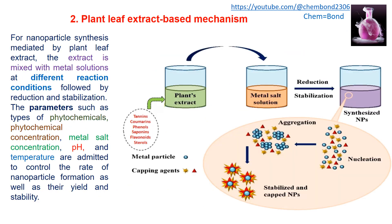The second method is the plant leaf extract-based mechanism for nanoparticle synthesis. The extract is mixed with a metal solution at different reaction conditions, followed by reduction and stabilization. The plant extract contains chemicals that reduce the positive metal salt ions; the nanoparticles then undergo nucleation and aggregation, and stabilized or capped nanoparticles are produced. The capping agents are provided by these plant chemicals.